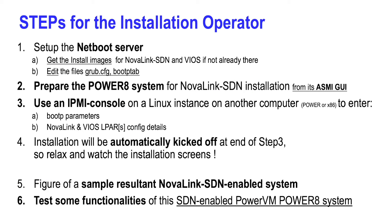This page lists the steps for the installation operator. Steps 1, 2, and 3 correspond to the three numbered boxes in the previous overview figure. In step 1, we set up the netboot server and get the install images for NovaLink and VIOS if they are not already there.